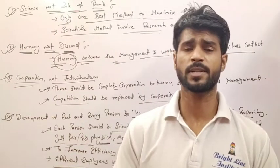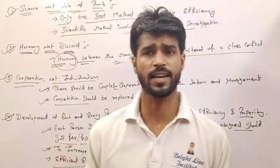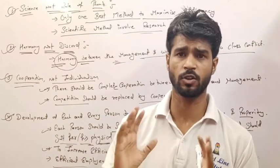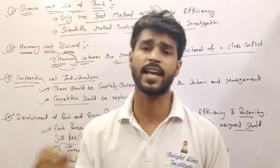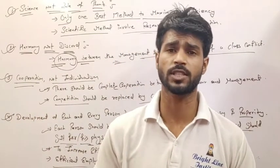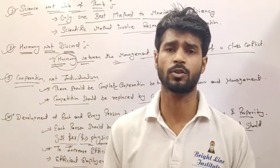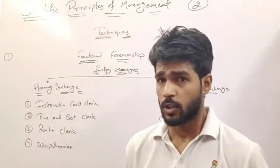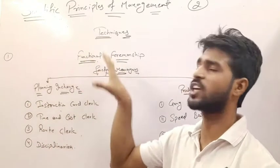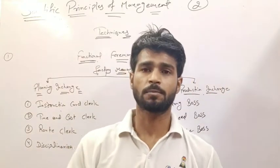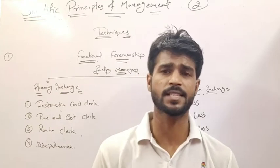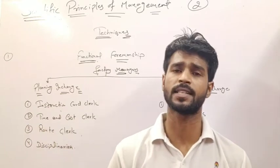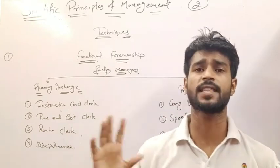These are the scientific principles which are important from an exam point of view. Now let's discuss the techniques — you need to know the techniques as well, because a lot of questions come from here. The first technique is functional foremanship. At the top level there is the CEO, manager, and supervisor, and at the lower level are the foremen.